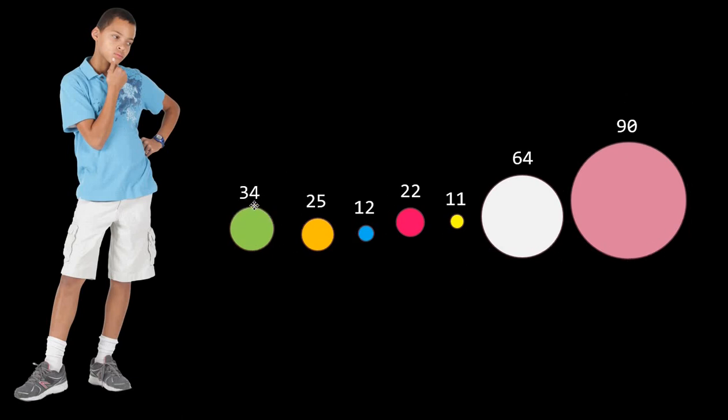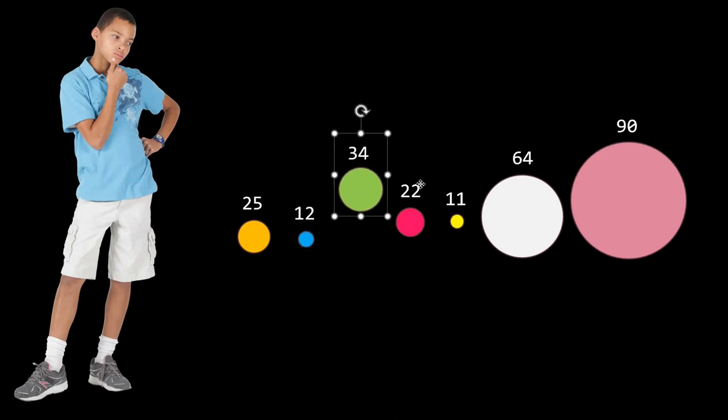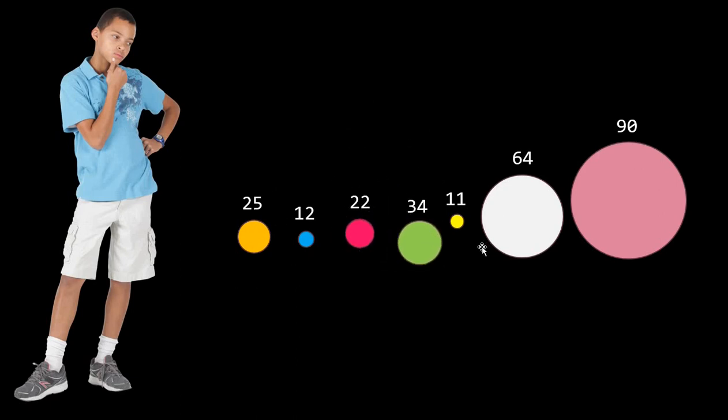Okay, so now we begin with 34 and compare with 25, so we put it on the left hand side and now we compare this one and this one, so 12 will be smaller, so it gets to the left hand side and now we compare between these two and so 22 is here and same way, 11 is here and we stop here because we see the 64 is indeed greater than 34.